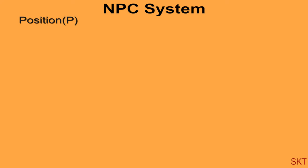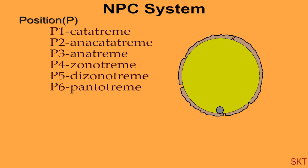P0 means uncertain or unknown position of aperture. P1 is also called as catatreme that means only one aperture that too at the proximal end of the pollen grain.